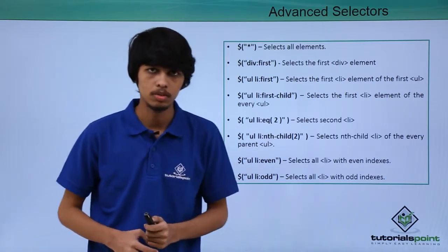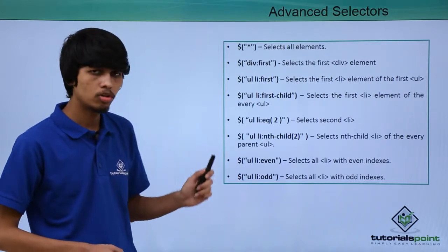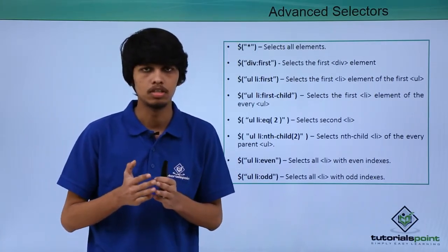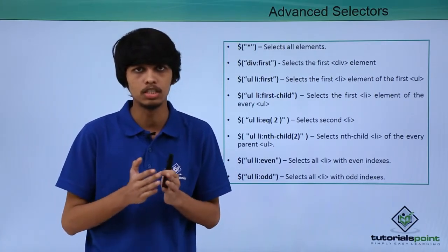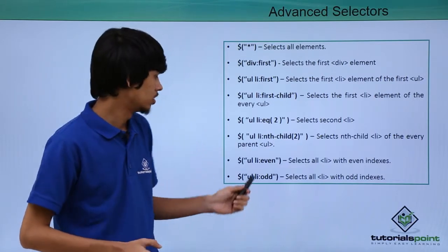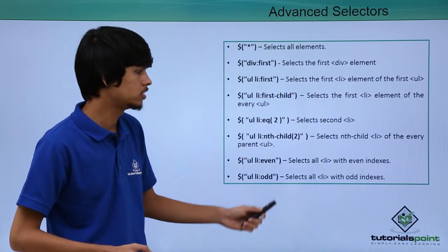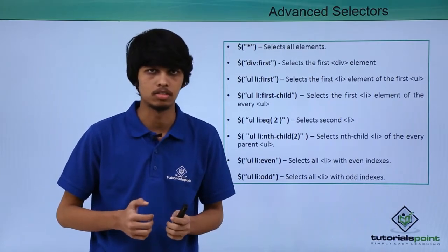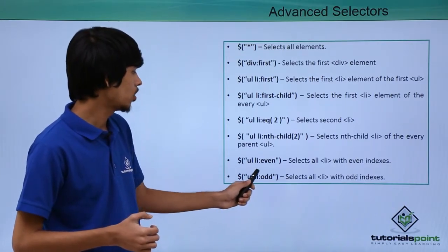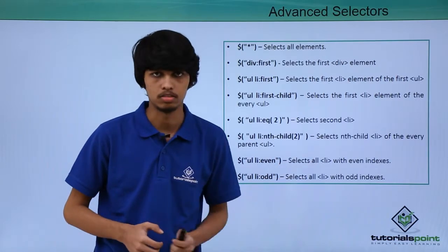The next selector is the even selector. If we want to select elements based on whether the index number is even or odd, then we can use the even selector. Dollar ul li :even will select li elements with even indexes. Similarly, ul li :odd will select li elements with odd indexes.